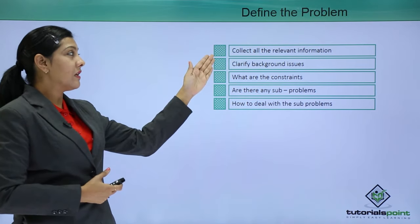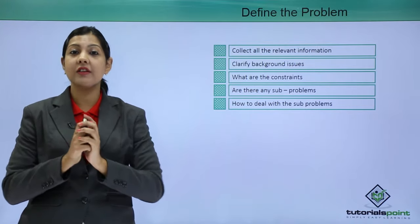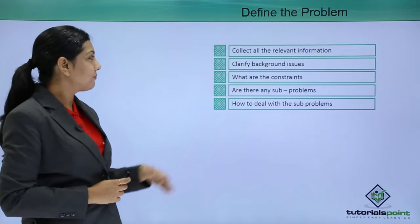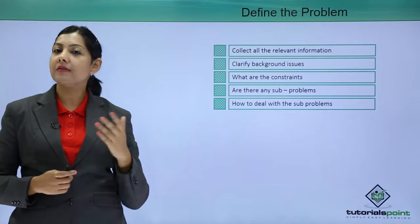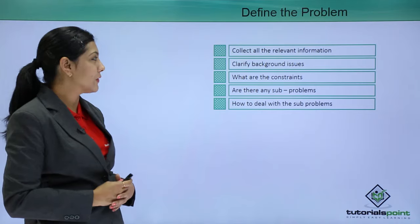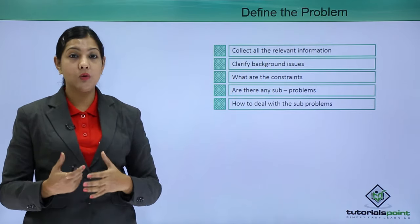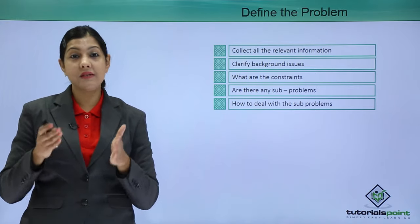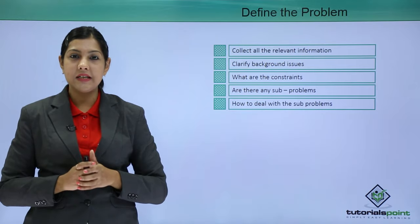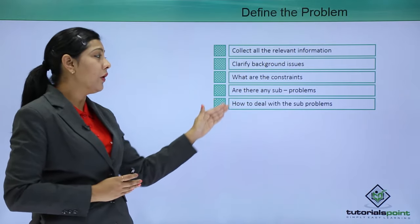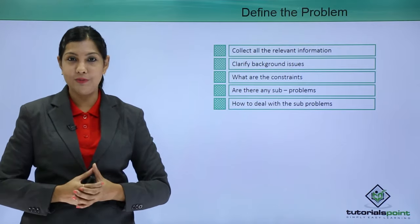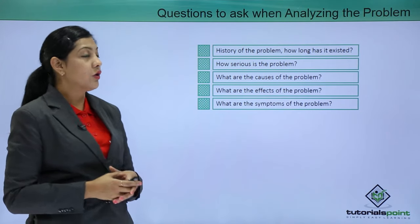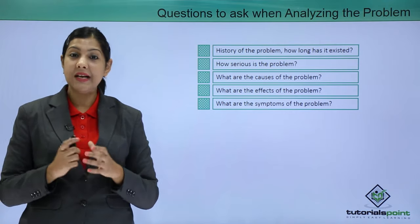Certain ways of defining the problem: first, collect all the relevant information you need for the problem-solving process — get everything together that will help you define the problem. Second, clarify any background issues — there might be things from the past that need to be collected. Third, identify the constraints — the do's and don'ts with regards to that problem. Fourth, check for sub-problems — under a large problem there might be sub-problems you have missed, and you need to understand how to deal with those within the larger problem.